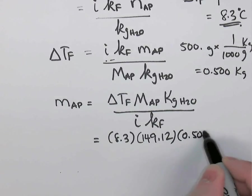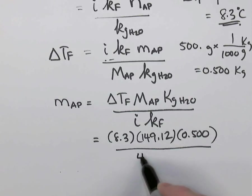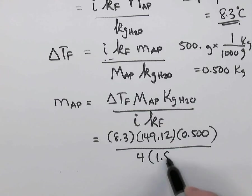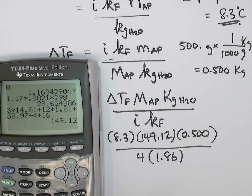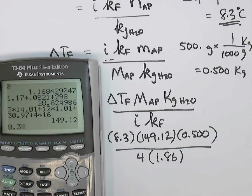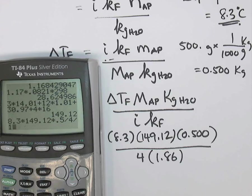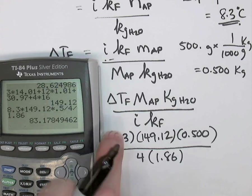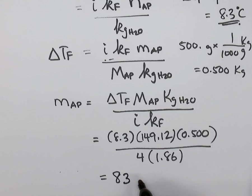And divide by the Van't Hoff factor, which was 4 in this case, and the Kf was 1.86, and we got that again from that table. So with our calculator one more time, let's evaluate. 8.3 times 149.12 times 0.5 divide by 4 and divide by 1.86, and we get 83.2 grams, or 83, if we just round it off to two sig figs, 83 grams of the ammonium phosphate.